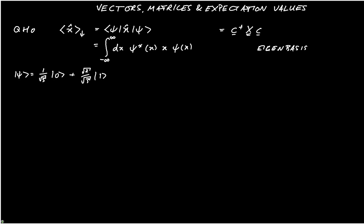The matrix representation of the operator x is given by bra k x hat ket n, and if you use the raising and lowering operators you can show that that's equal to 1 over root 2 alpha into the square root of n plus 1 delta k n plus 1 plus root n delta k n minus 1.